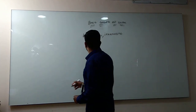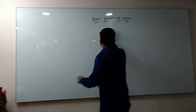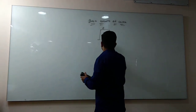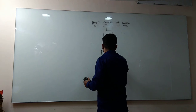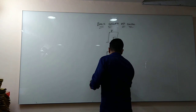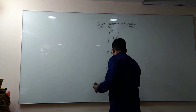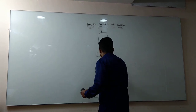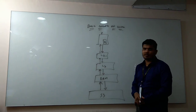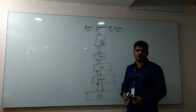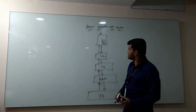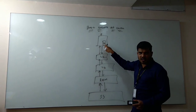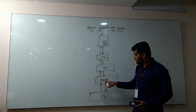Now if I want to draw a memory hierarchy diagram, you have a processor. Whenever the processor searches for any data, any video, or any audio, the first point of contact it will search for is the L1 cache. If it is available in the L1 cache, it will directly fetch it from the L1 cache. If it's not available, it will go and search in L2 cache, followed by L3 cache, then RAM, then secondary storage.